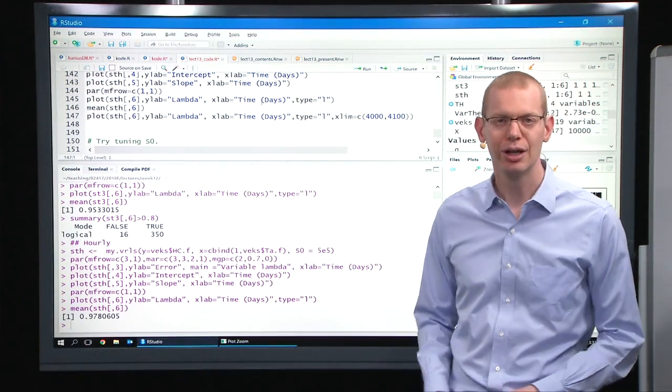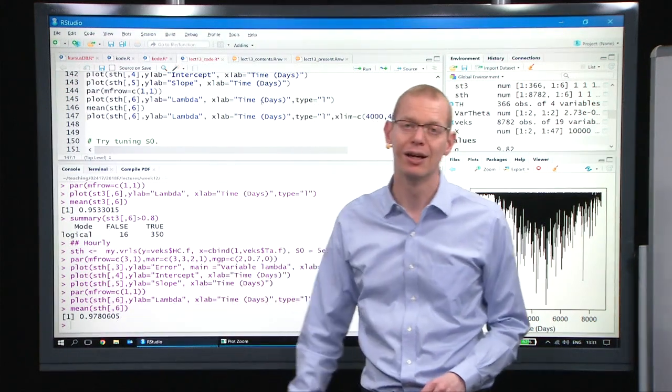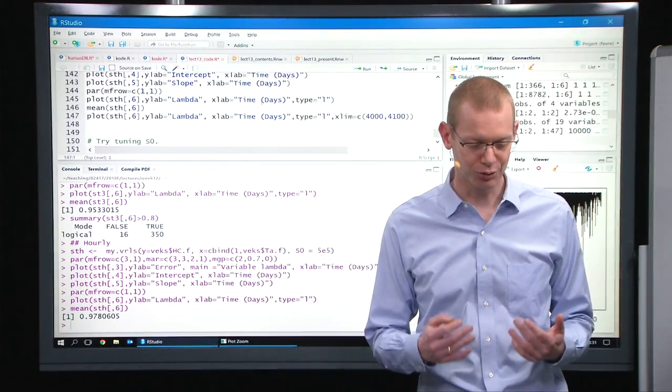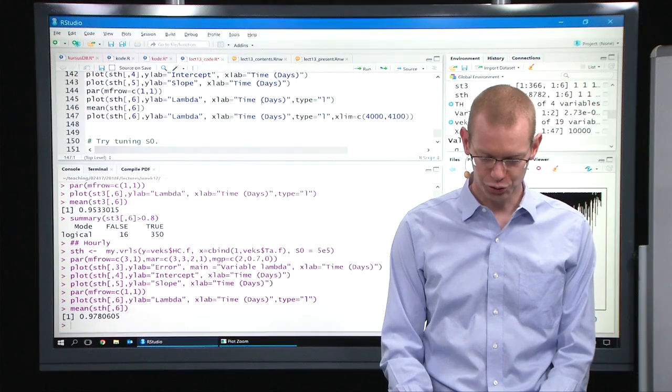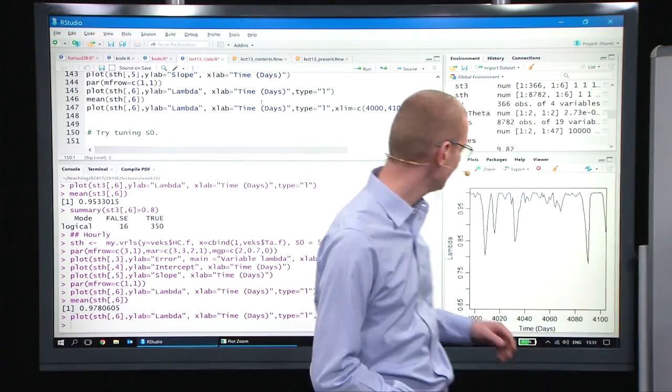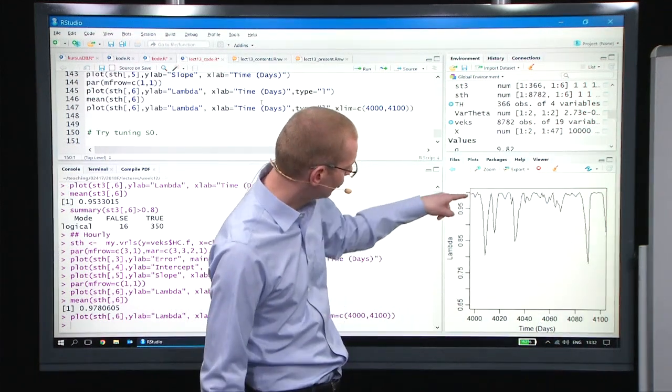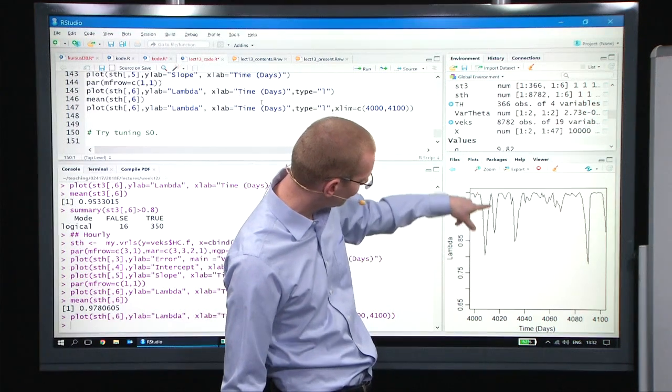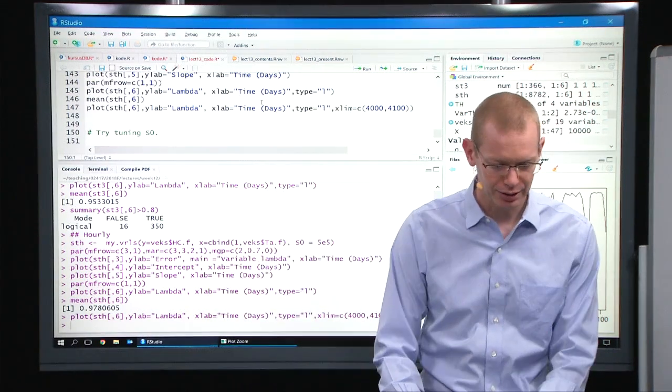The mean value here is 0.98. So it's very, very close to one in mean, and it's just to zoom in to a small period of time to show what is actually happening. So we see some dips and then it recovers, dips recover, maybe actually to make it more clear.